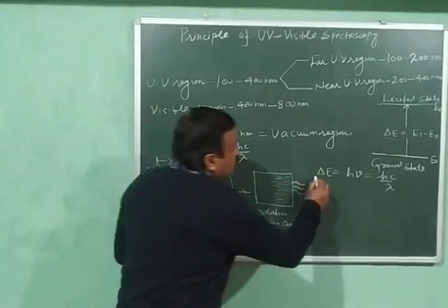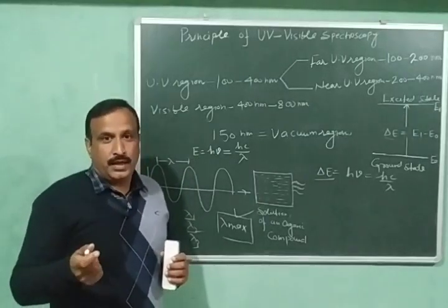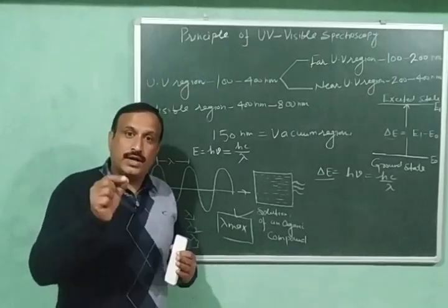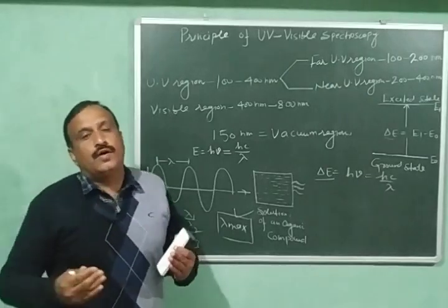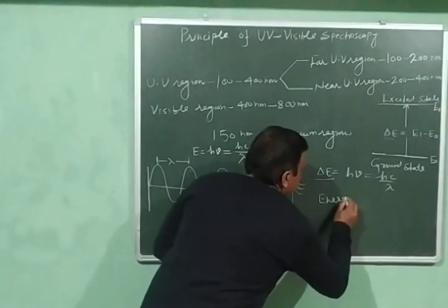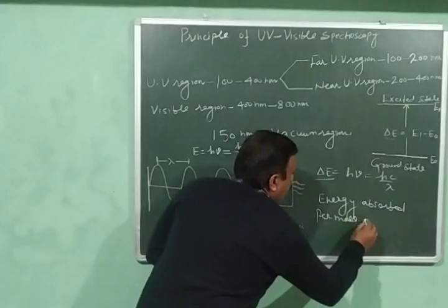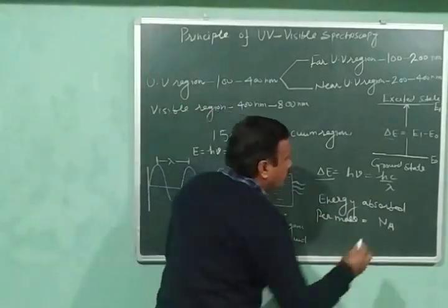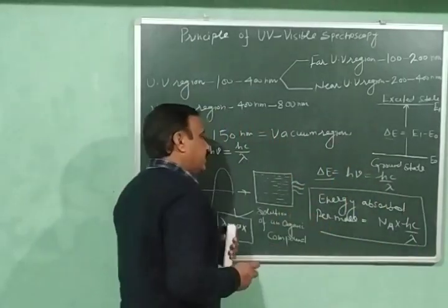This equation is for the absorption of one photon, since one molecule absorbs one photon. If you want to calculate the energy absorbed per mole — that is, by one mole of organic molecules — we multiply by Avogadro's number, because one mole contains Avogadro's number of molecules. So the energy absorbed per mole equals Nₐ × hc/λ.